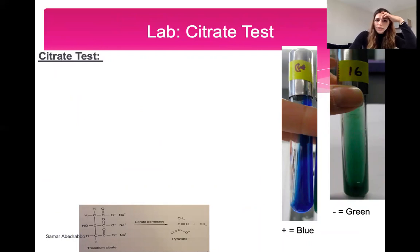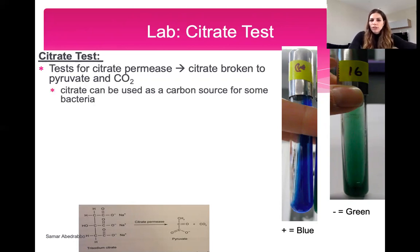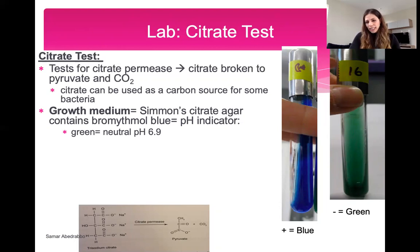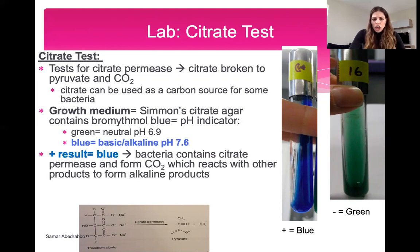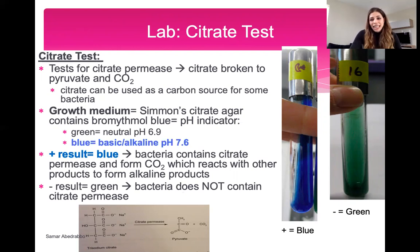The citrate test checks for citrate permease, which breaks citrate down into pyruvate and CO2. Citrate can be used as a carbon source for some bacteria. You grow bacteria on Simmons citrate agar with a pH indicator. Green means neutral (pH ~6.9) — negative result, meaning bacteria cannot use citrate. If bacteria have citrate permease, they break down citrate producing alkaline products (CO2 reacts to form alkaline products), turning the medium blue — positive result.